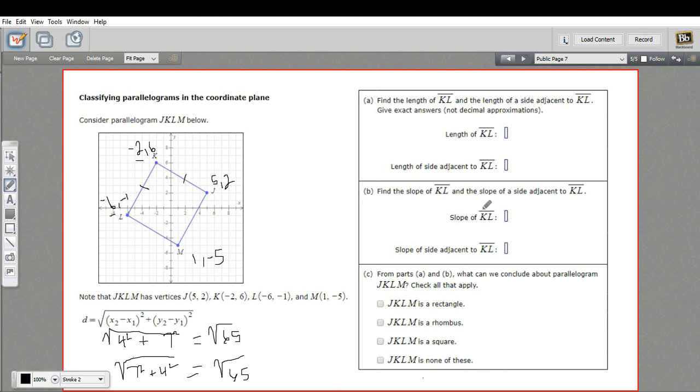The next thing they're asking us to do is to find the slope of KL and the slope of a side that's adjacent. The slope is the rise over the run of a line. If we look at KL, we could take this point and look at the change in y. The change in y is 7, positive 7, and the change in x is positive 4. So the slope of KL is 7/4.